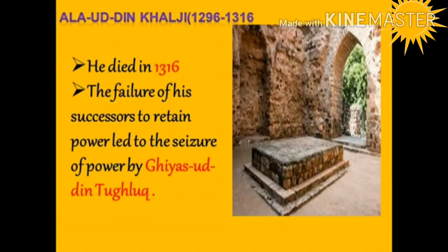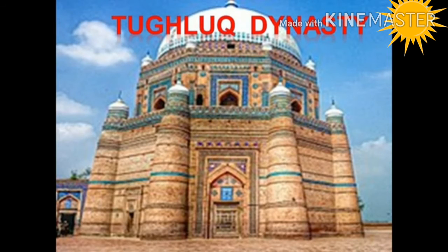The failure of Alauddin's successors to retain power led to Ghiyasuddin Tughluq seizing power and founding the Tughluq dynasty, which began in 1320.